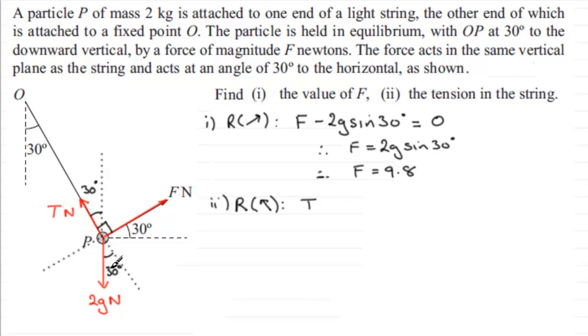But the component of 2g down in this direction is in the opposite direction to this, so it's going to be negative. Its component is 2g cosine 30 because it includes the angle. So it's minus 2g cos 30 degrees. That's the resultant force acting in this direction, and because the particle's not moving, that resultant force is equal to zero.